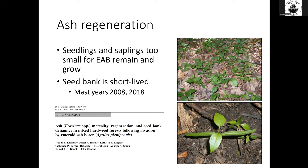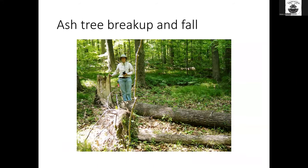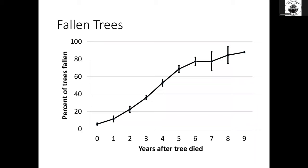We tracked those ash trees after they died to see how quickly they would break up and fall down, and found that was pretty fast. Within two years of dying, 20% of those trees had fallen, and by six years after dying, about 80% had fallen. The dead trees are important habitat for a number of animals, particularly bats that like to roost beneath the bark. The bark sloughs off in big sheets, making wonderful bat roosting habitat — but those trees fall down fairly quickly and then that habitat is lost. Without additional large trees on the landscape, that habitat is not available for those bats.